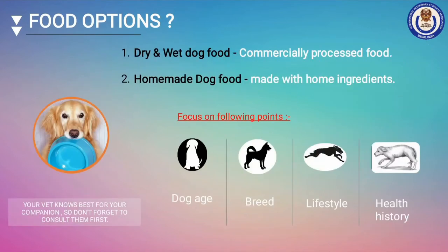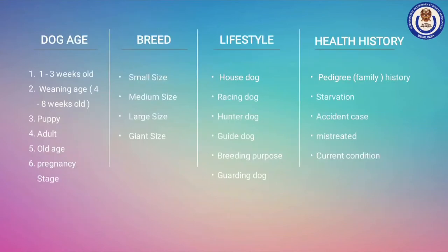Sources we have for dog food are commercially processed dog food and homemade dog food. Before selecting the food, we must understand their requirements, which vary with the following points: dog age, breed, lifestyle, and health history. From the time they are born to their last stage of life, they need a balanced, palatable, and digestible diet, but these vary in density and proportion of nutrients according to age.